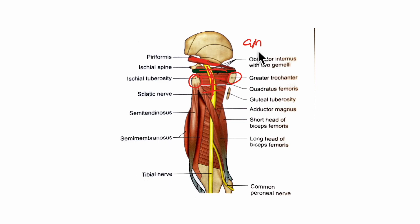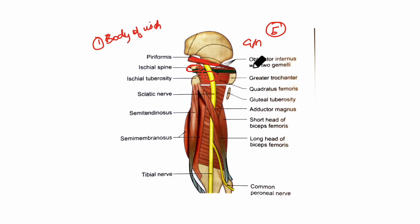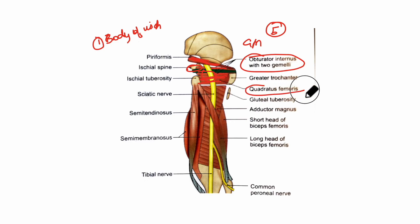Deep or anteriorly it is related to five structures. First is the body of the ischium. Second is the tendon of the obturator internus with the gemelli. Third is the quadratus femoris muscle and the obturator externus muscle. Fourth is the capsule of the hip joint, and finally the upper transverse fibers of the adductor magnus muscle.